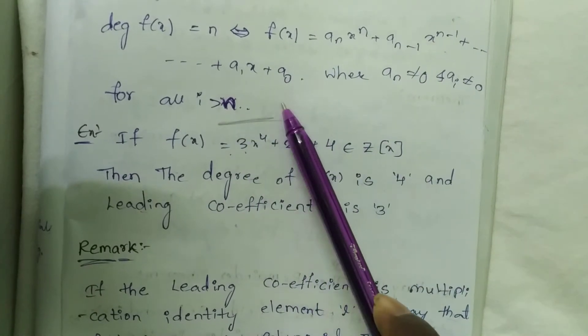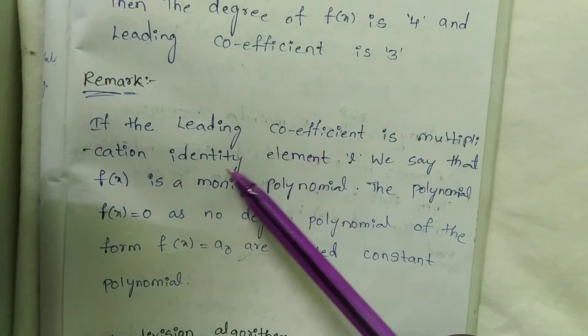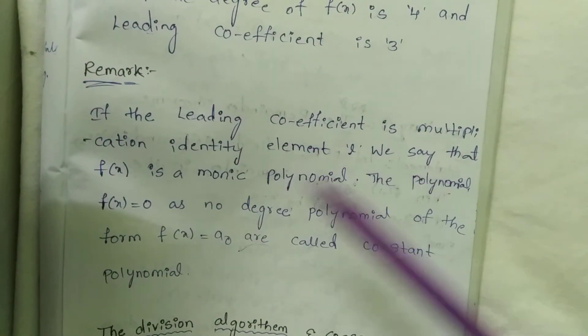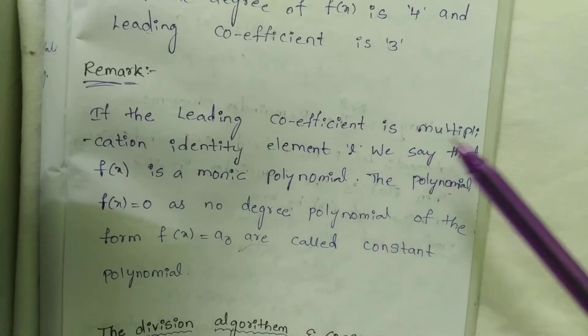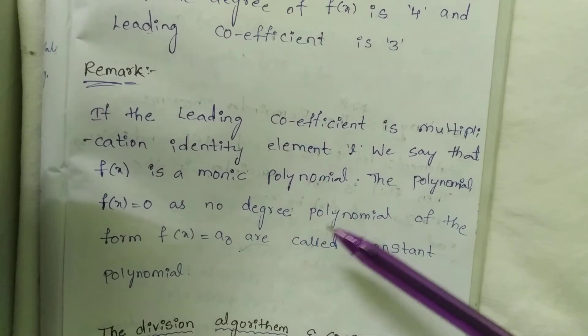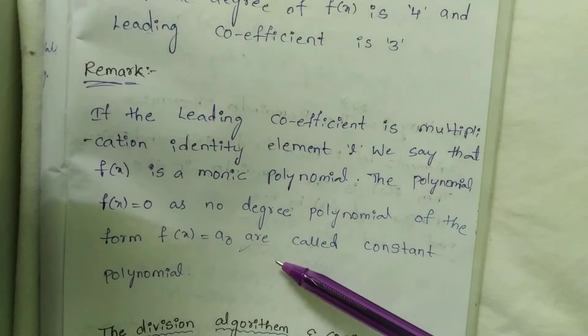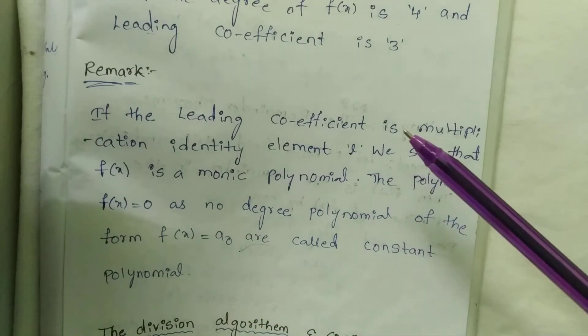If f(x) is constant, then there is no degree polynomial. We say that f(x) is a monic polynomial. The polynomial f(x) = 0 has no degree.